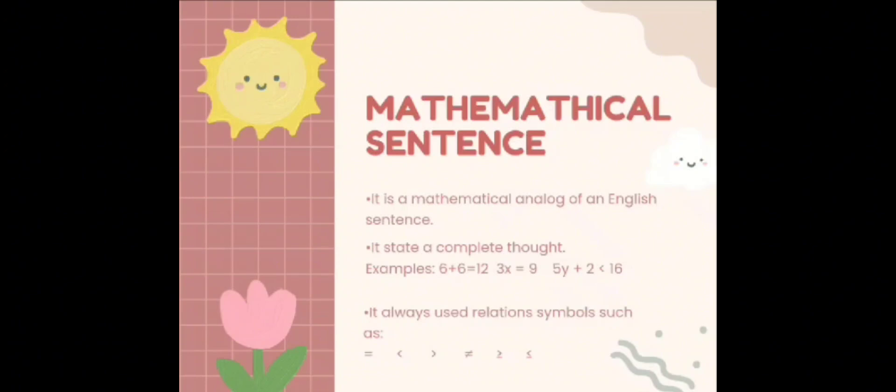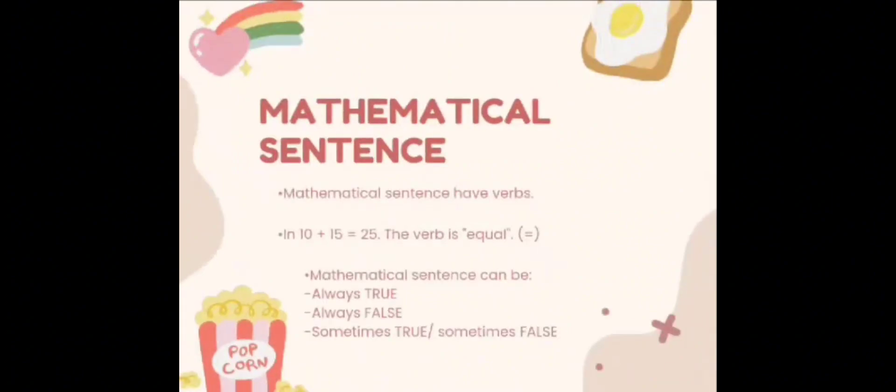And we also use symbols which is equal, less than, greater than, greater than or equal, or less than or equal. Mathematical sentence have verbs, for example in 10 plus 15 equals 25, the verb is the equal sign. And in mathematical sentences there are three types which is true sentence or false sentence. But sometimes it can be true and it can also be false.